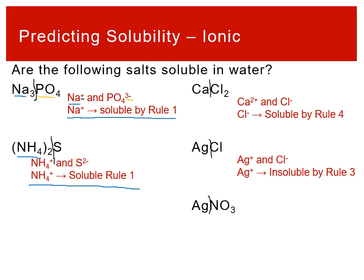If we change it to silver nitrate, now we have silver and nitrate (NO₃⁻). Rule two says nitrate is always soluble, and rule two is above rule three. So nitrate really wants to dissolve — nitrate compounds are always soluble regardless of what they're paired with. Silver nitrate is therefore soluble in water, even though silver alone would not promote solubility.